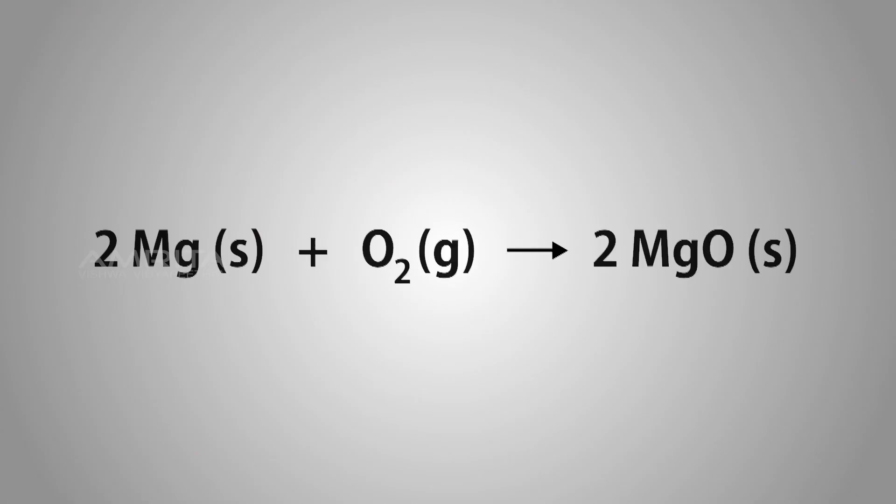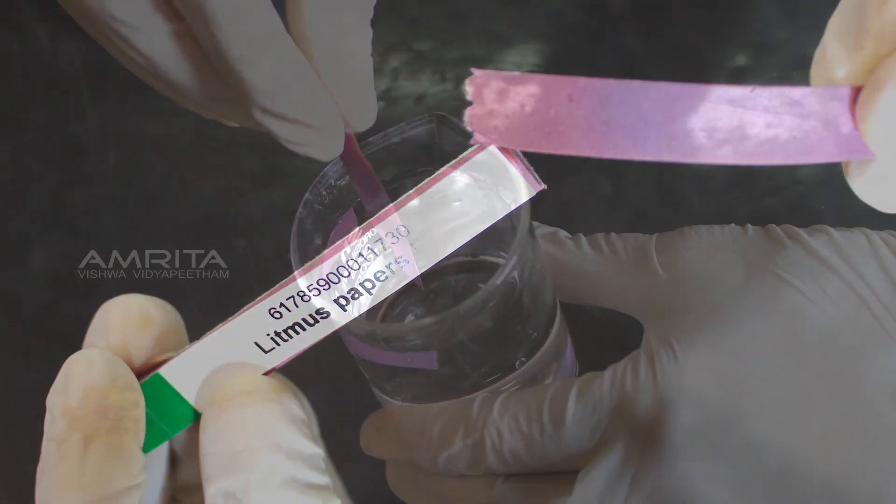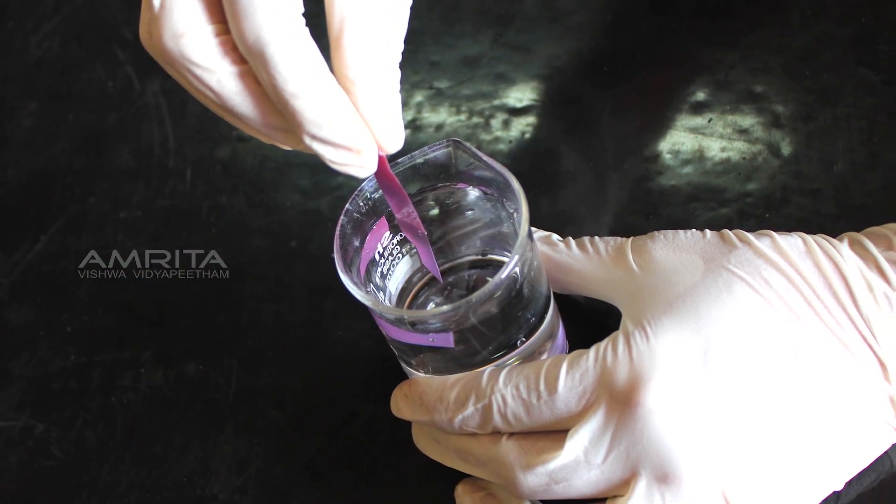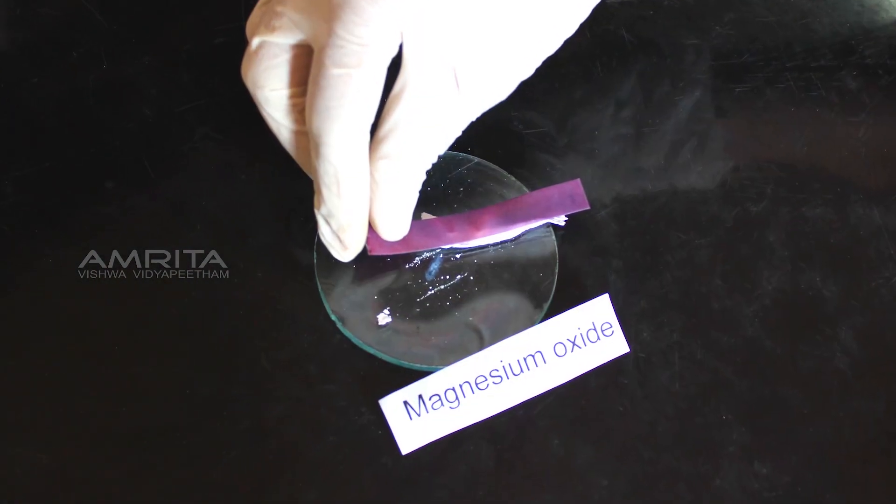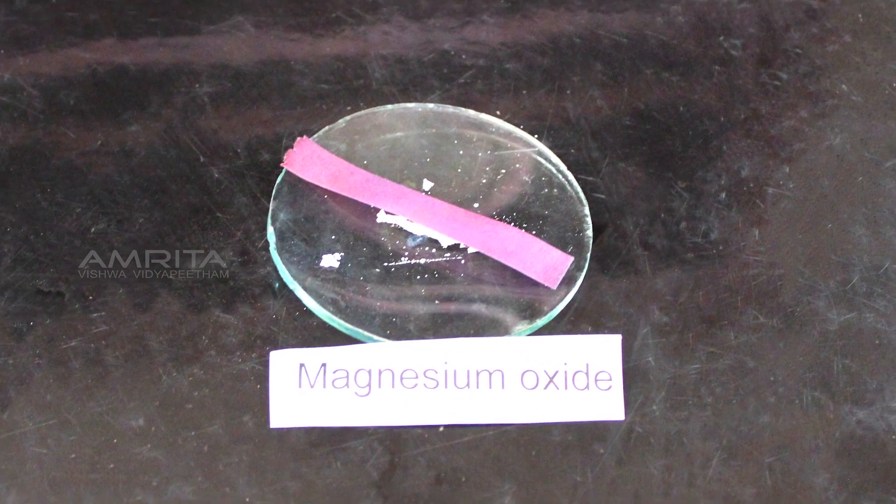Now take red litmus paper and moisten it with distilled water. Place the moist red litmus paper over the watch glass so that it is in contact with the magnesium oxide.